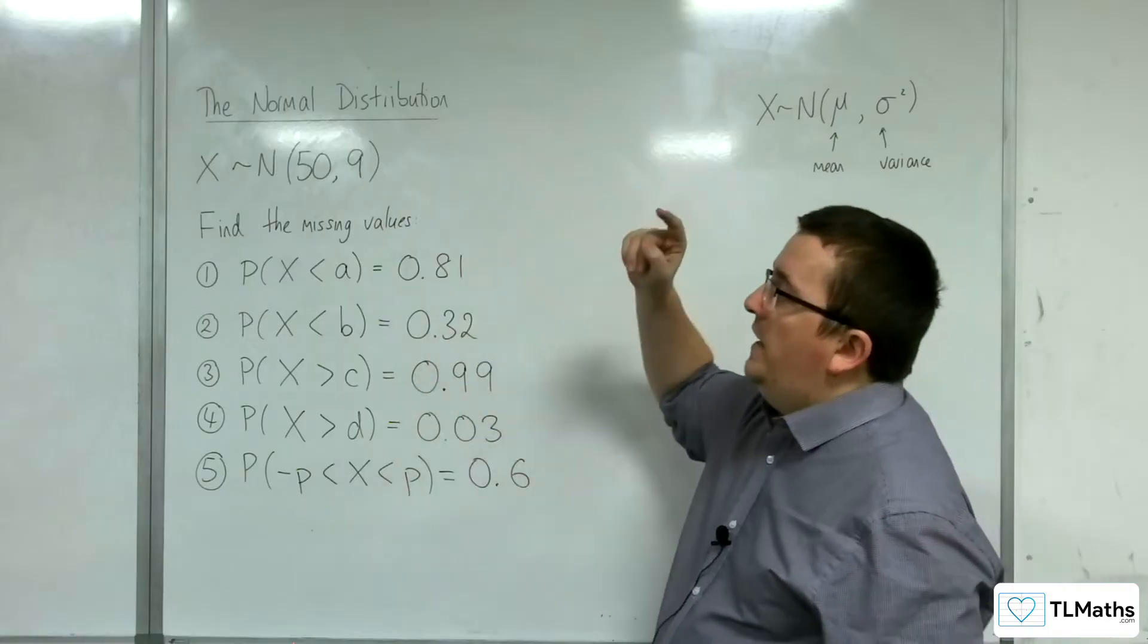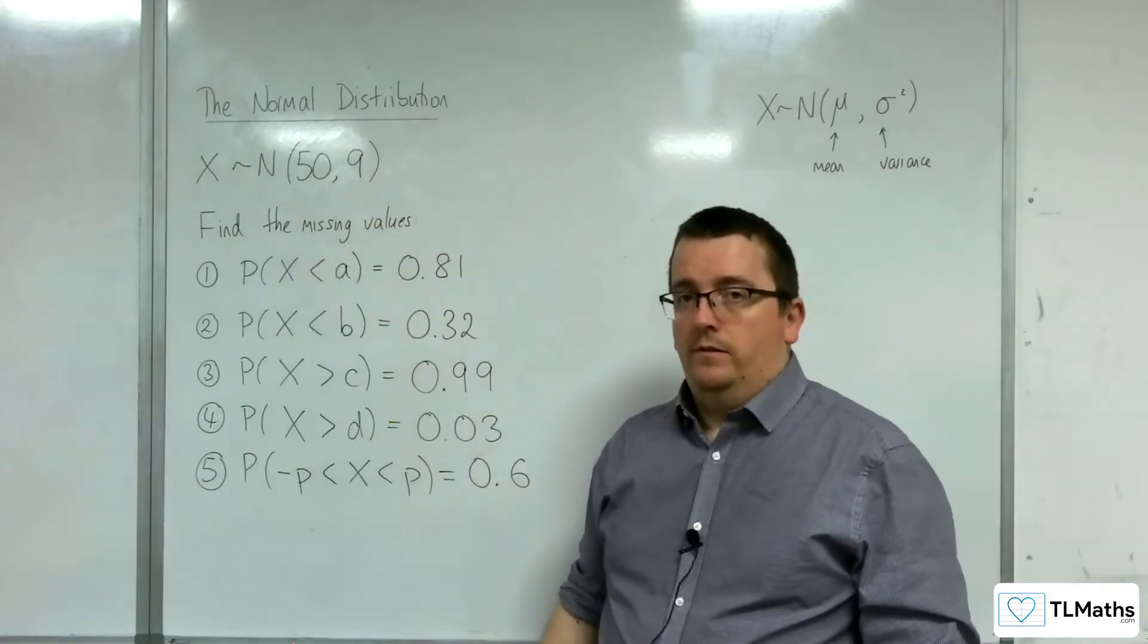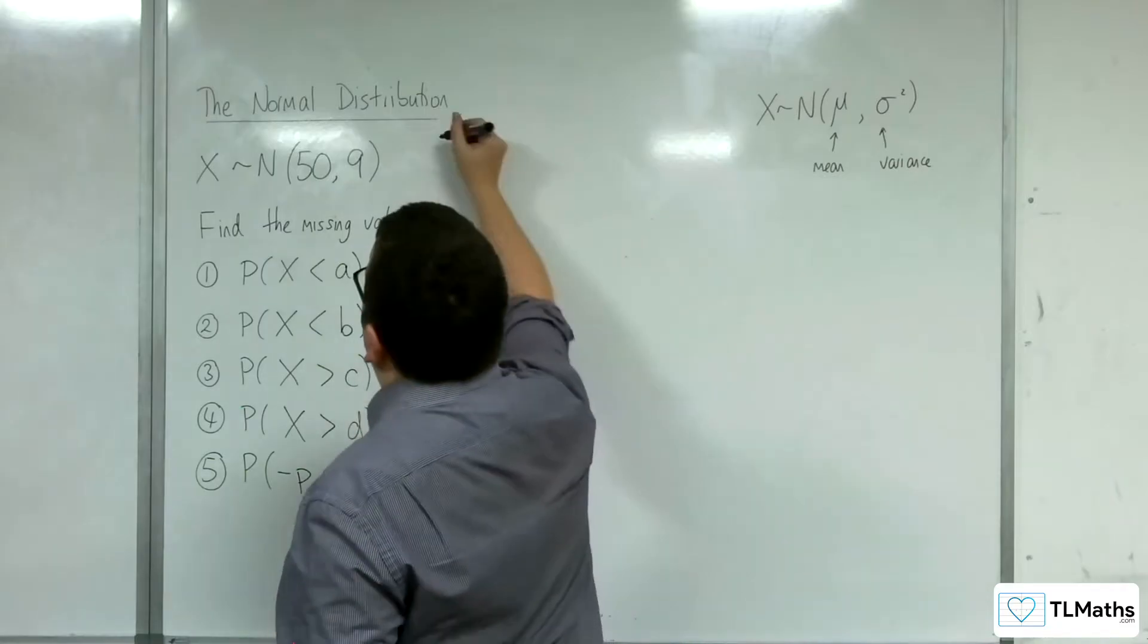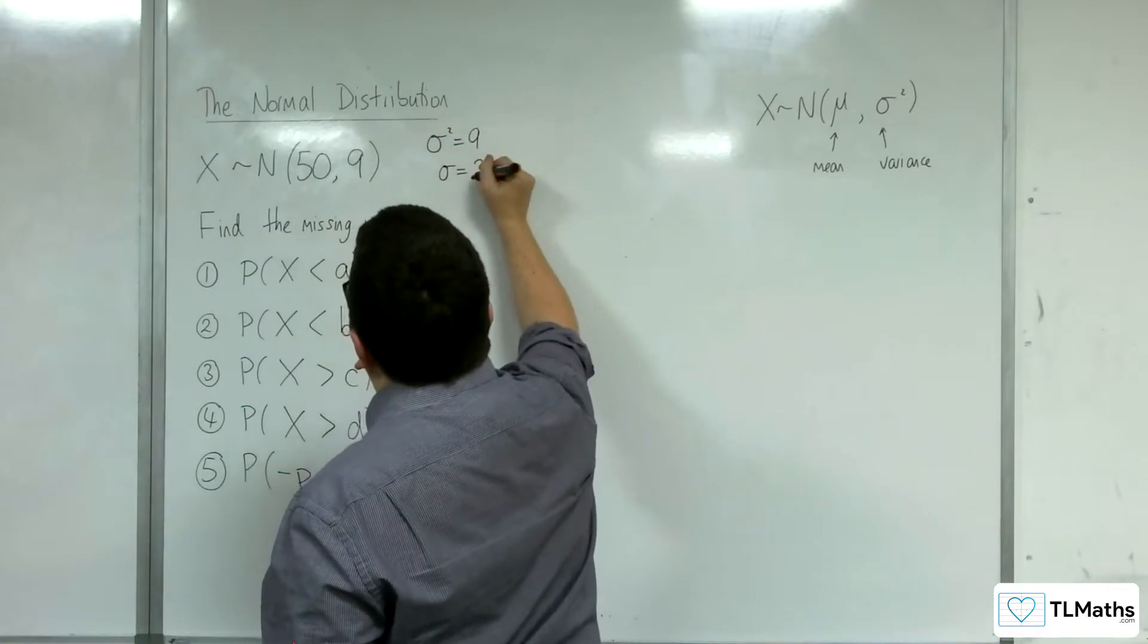So now we're going to be dealing with a normal distribution with a mean of 50 and a variance of 9. So because variance is 9, that means the standard deviation is, of course, 3, the square root of 9.